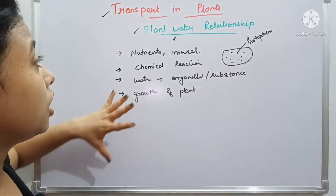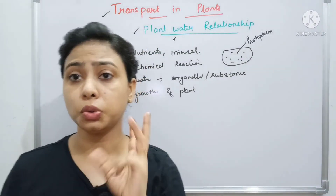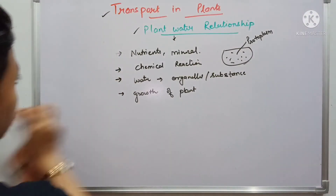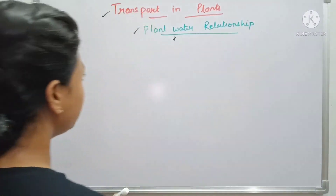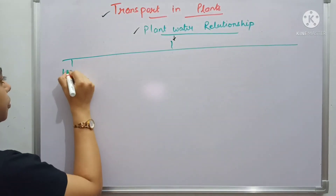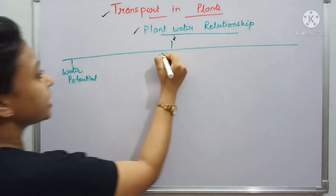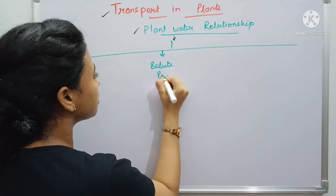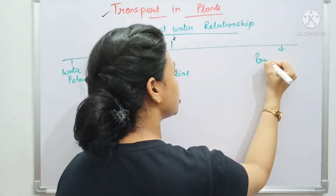To understand plant-water relationship, we need to know three important terms. The first term is water potential, the second term is solute potential, and the third term is pressure potential.